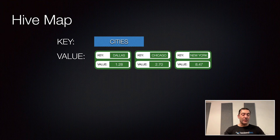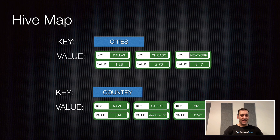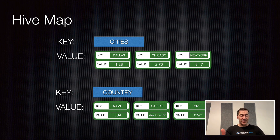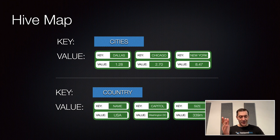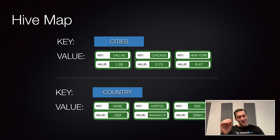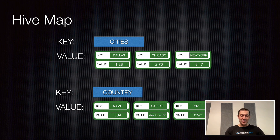Here's another example of using map. The first example was cities with a collection of cities, but you can use it for different purposes. Another example: the key is a country, and the value holds individual properties of that country. Here I have the country "USA" with a capital and a population size — those are individual values assigned to that specific key. There are also APIs to work on individual values within the map.